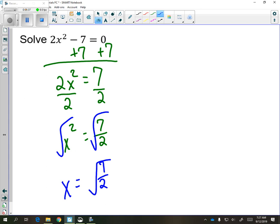Hopefully, we remember that to get x by itself, to undo a power of 2, you're going to take the square root. And we're going to have x equals radical 7 over 2. But when we take the square root, you need to include a plus or minus. So that's our solution to this particular example.